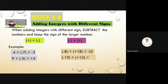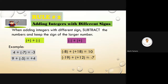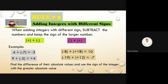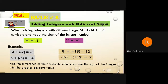Negative 19 plus positive 12: the answer is negative 7. Find the difference of their absolute values and use the sign of the integer with the greater absolute value.